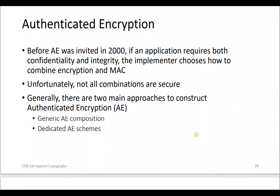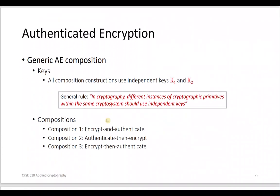Some applications require both confidentiality and integrity, so we combine encryption with MAC. There are two general approaches: generic authenticated encryption compositions and dedicated AE schemes. The three generic compositions are: encrypt and authenticate in parallel, authenticate then encrypt, and encrypt then authenticate. Dedicated schemes are based on either block ciphers or permutations.